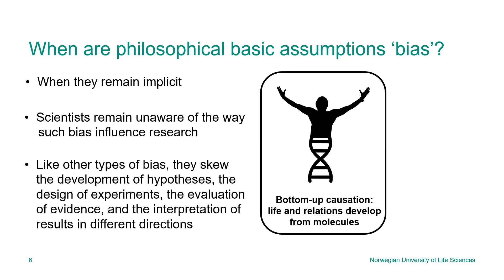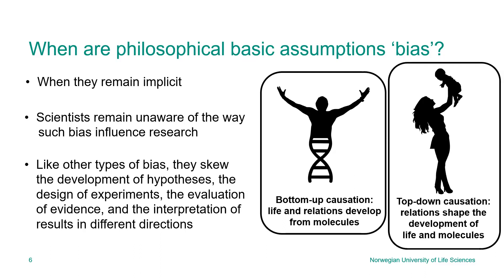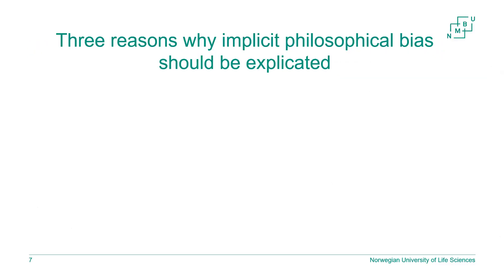An example of a philosophical bias of an ontological type is what we call bottom-up causation: causes travel from the lower level to the upper level. So life and relations develop from molecules — for instance, we say that DNA is the key of life, and to understand life we need to understand the chemistry of DNA. But there's also the opposite philosophical bias, top-down causation, which says that relationships shape the development of life and molecules — meaning that if we want to understand how our genes and DNA are formed, we have to look at the relationships that shape them.